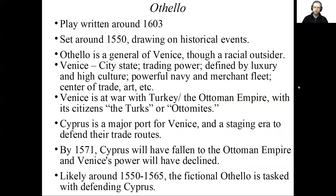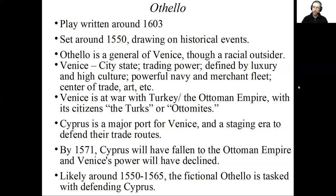In terms of Othello, this play was likely written around 1603. However, the play is likely set around 1550 to 1565. Shakespeare is looking back at the relatively recent history of his nation and the world and drawing from historical events I'll describe in more detail in a minute. The basic premise of this play is that Othello is a general of Venice — a Venetian general tasked with the defense of the city and its holdings. Venice has a kind of mercantile empire. He is a racial outsider, a black man living in a predominantly white society, and Shakespeare has chosen this text to start exploring the racial context of his day.